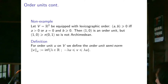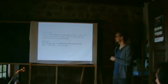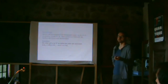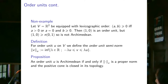If we have an order unit u, we can define the order unit semi-norm: ‖v‖ = inf{λ > 0 : −λu ≤ v ≤ λu}. This satisfies the triangle inequality and homogeneity, but it can be zero for non-zero v — exactly when v is infinitesimal. Proposition: an order unit is Archimedean if and only if this is a proper norm and the positive cone is closed in its topology.